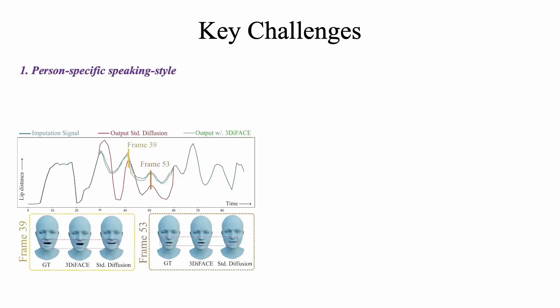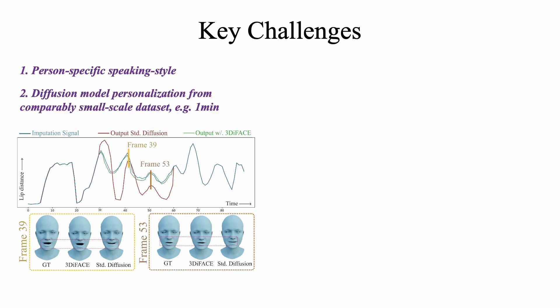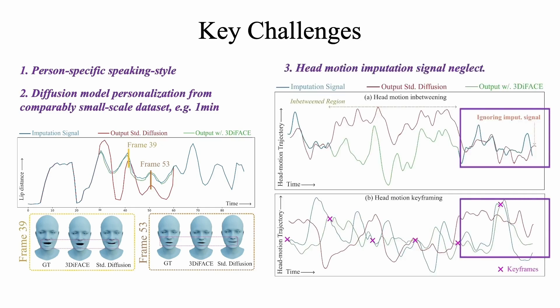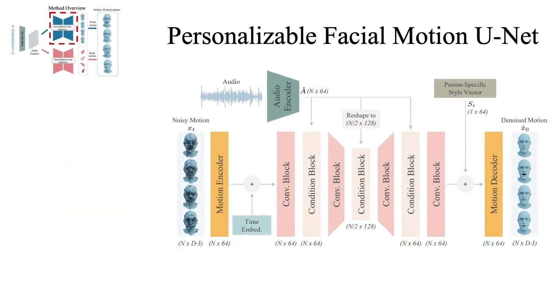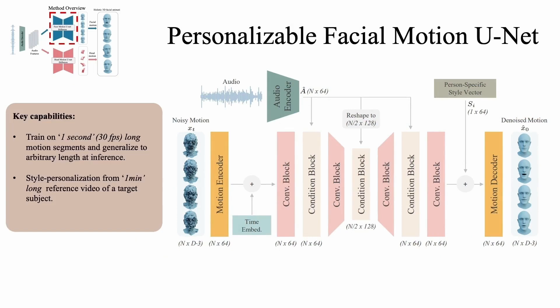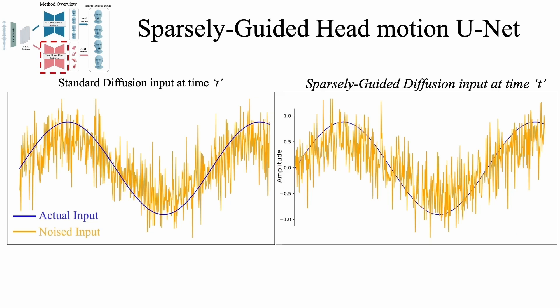Facial movements are person-specific. During editing, if the speaking style is not personalized and doesn't match the given motion signal, it will result in unrealistic animation. Second, the proposed diffusion model should be capable of personalization from small-scale data of the target subject. Third, for head motion, standard diffusion-based editing ignores the sparse inputs. To address personalization challenges, we introduce a fully 1D convolution unit that can train on one-second-long motion segments and generalize to larger sequences at test time.